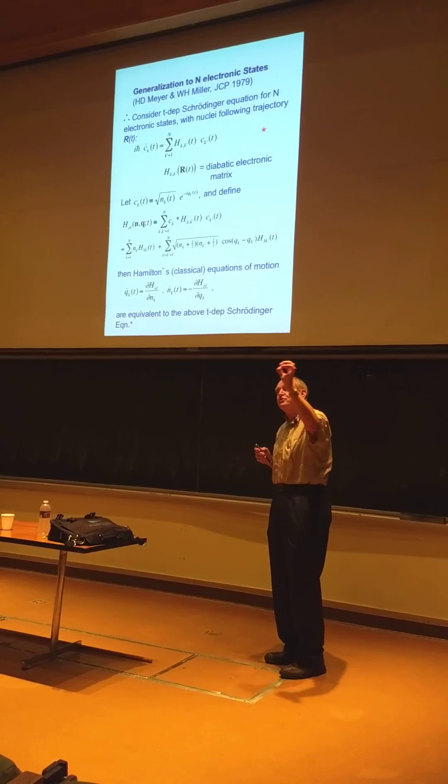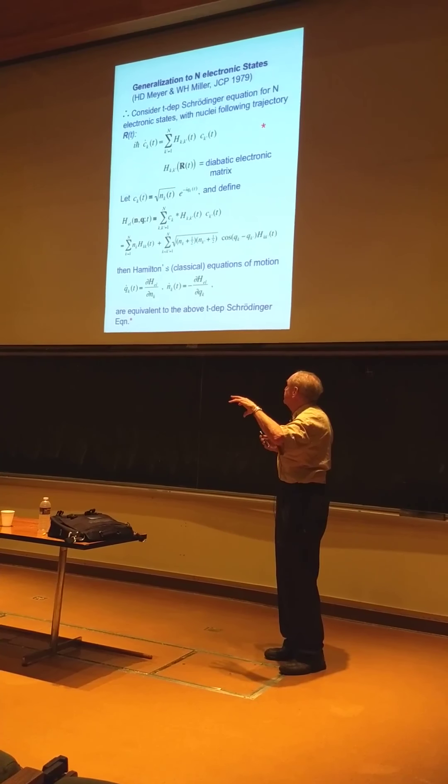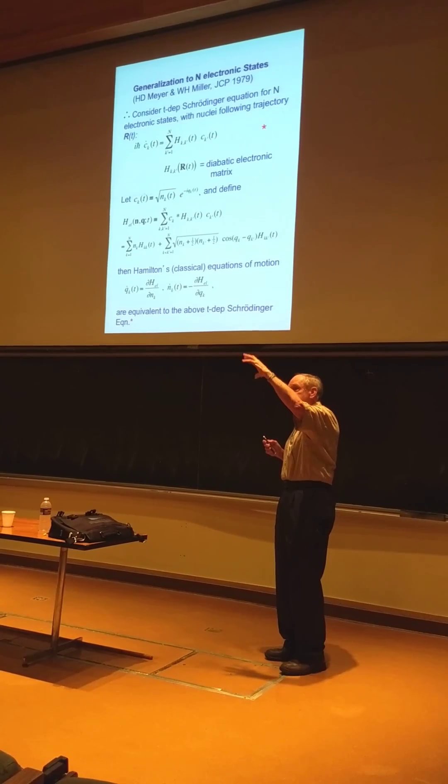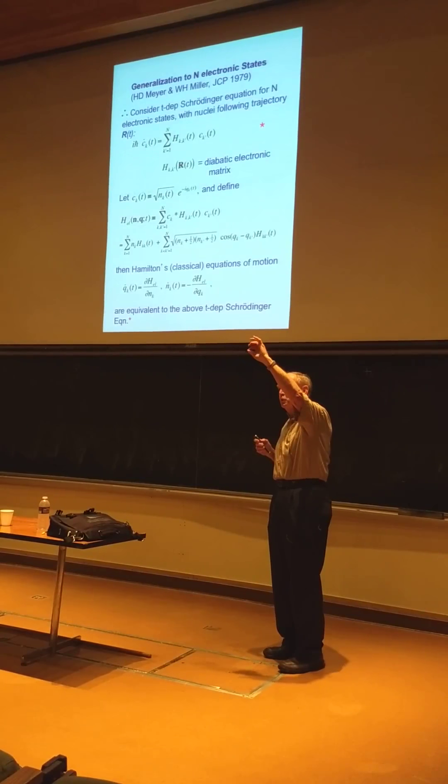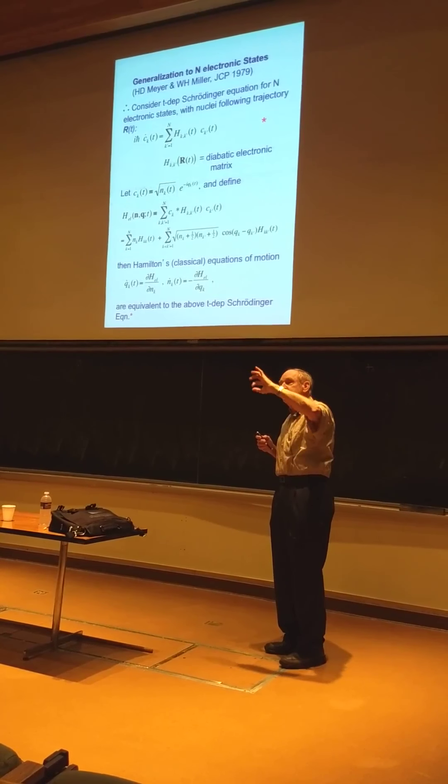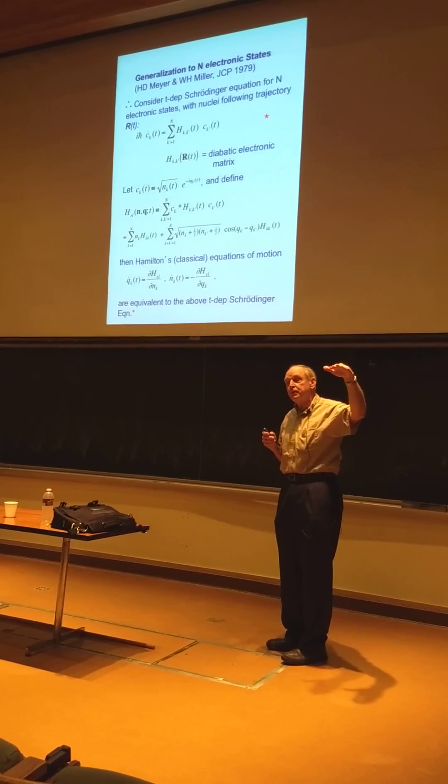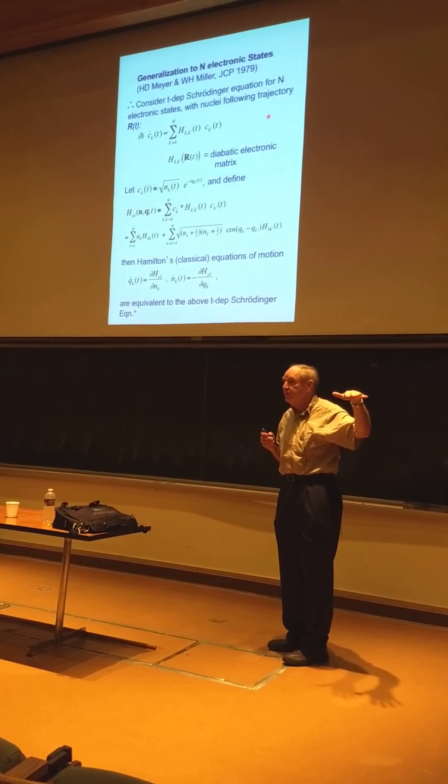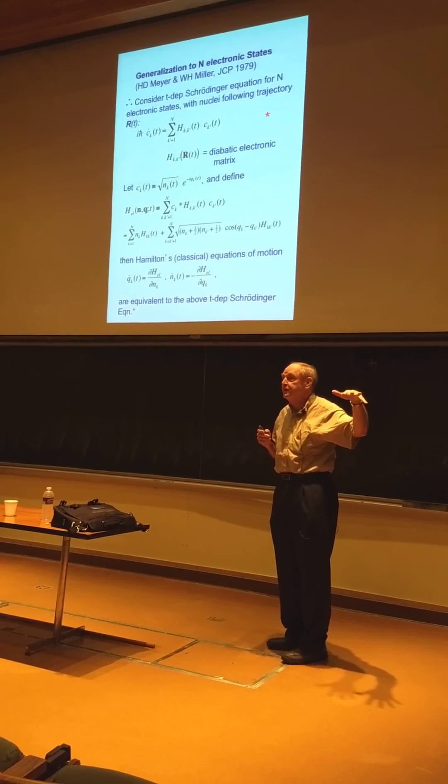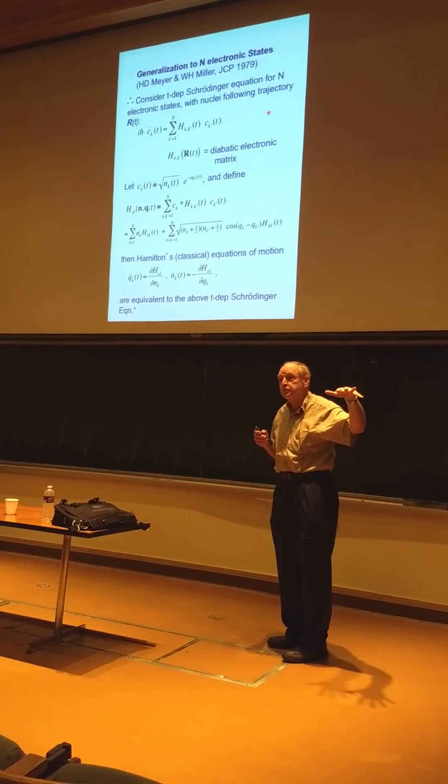So, and there would only be one trajectory. When you choose the initial actions, there's no angle variables to choose. There's only one, and it's irrelevant. So, there's only one trajectory, and that average trajectory will not end up on one potential surface or the other. And that's, you know, the big defect of the Ehrenfest procedure.